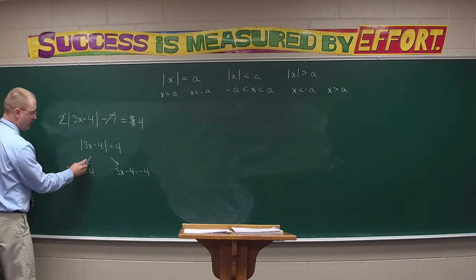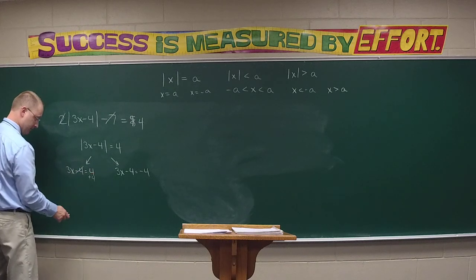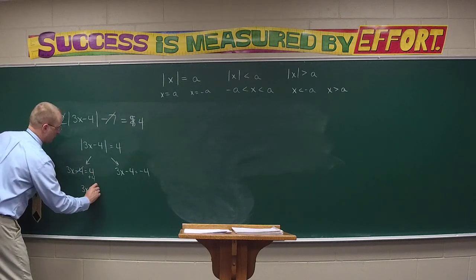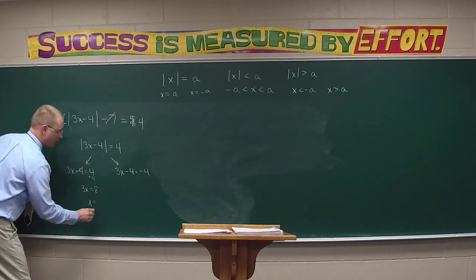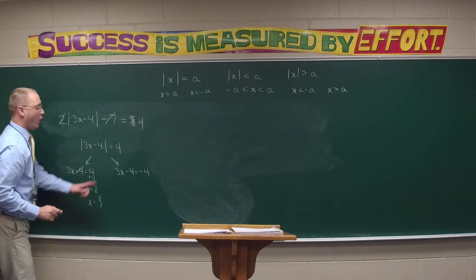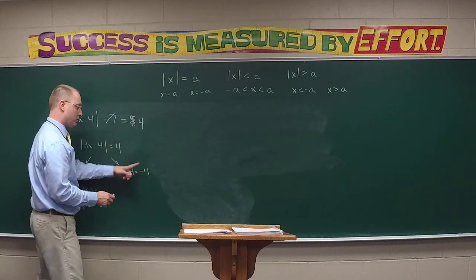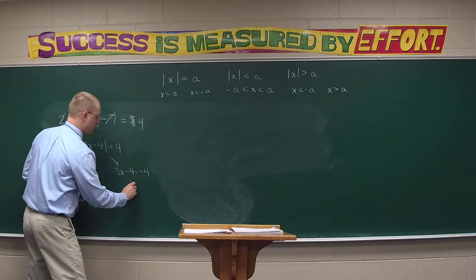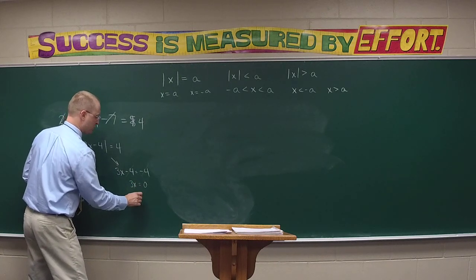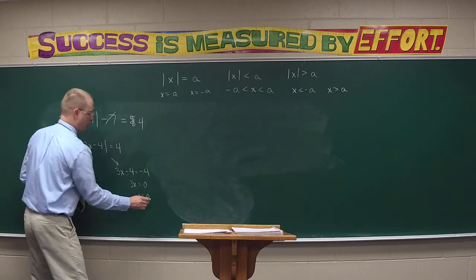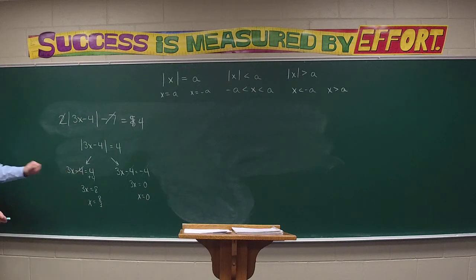Once it's isolated, I take one equation and split it into two. My first equation is 3x minus 4 equals 4, and 3x minus 4 equals negative 4. Move the negative 4 over as a positive 4 to get 3x equals 8, so x equals 8 thirds. Over here, the negative 4s cancel, so 3x equals zero, therefore x is zero. There are my two answers.